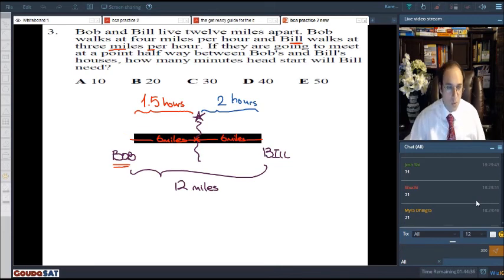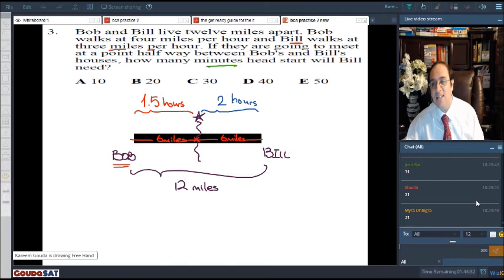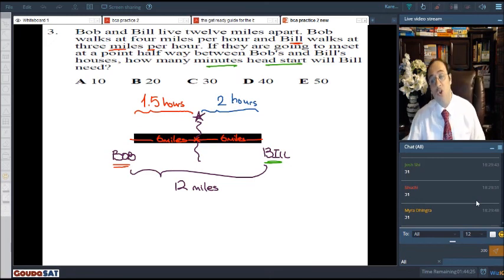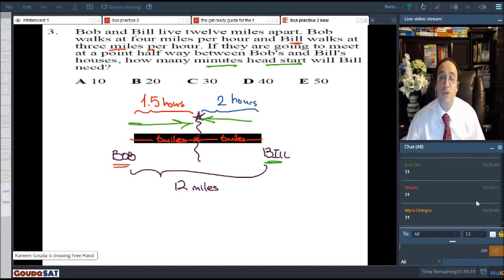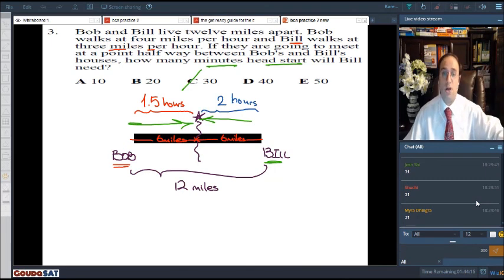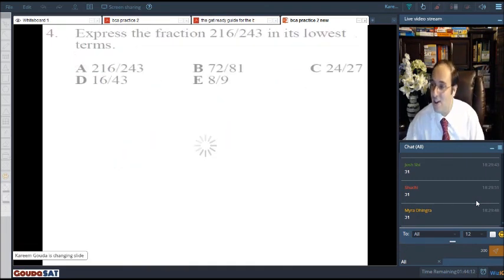Now, where's the answer to the question? Look at the question one more time. How many minutes head start will Bill need so that they can meet at the halfway point at the same time? Oh, now I understand. So, Bill will need 2 hours to get here, but Bob will only need 1 and a half hours. So, Bill needs to start 30 minutes earlier because he's going to take 30 minutes more time to reach the halfway point. Easy? Easy.